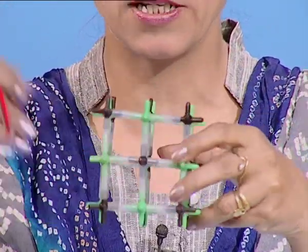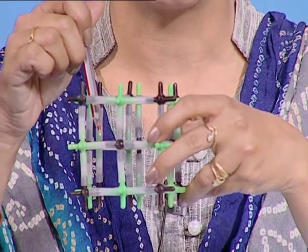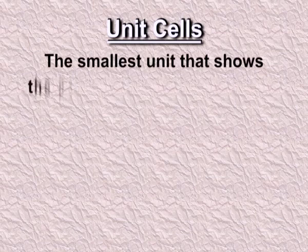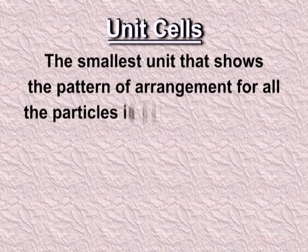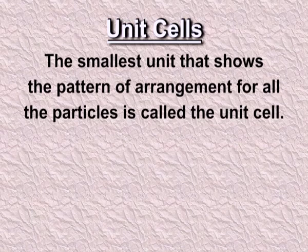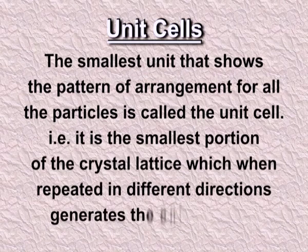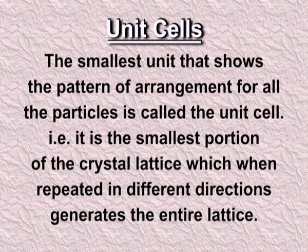So we can say that this is a unit cell — the basic constituent of a crystal lattice. The smallest unit that shows the pattern of arrangement for all the particles is called the unit cell. That is, it is the smallest portion of the crystal lattice which, when repeated in different directions, generates the entire lattice. In the picture, the blue shaded portion is a unit cell. It is repeated in three dimensions to get the entire crystal lattice.